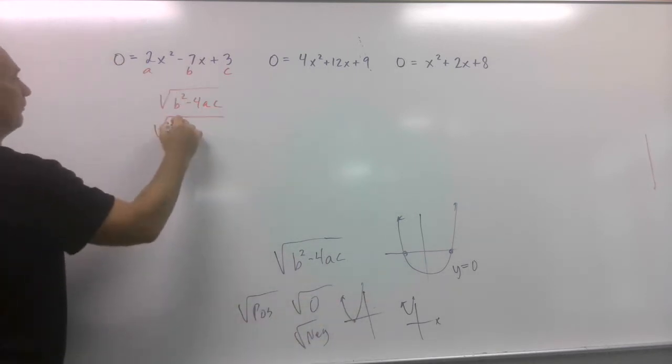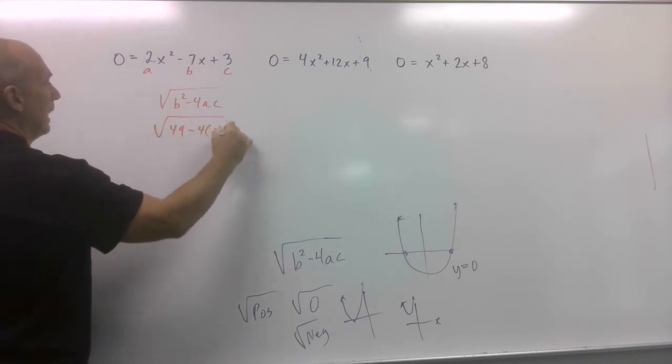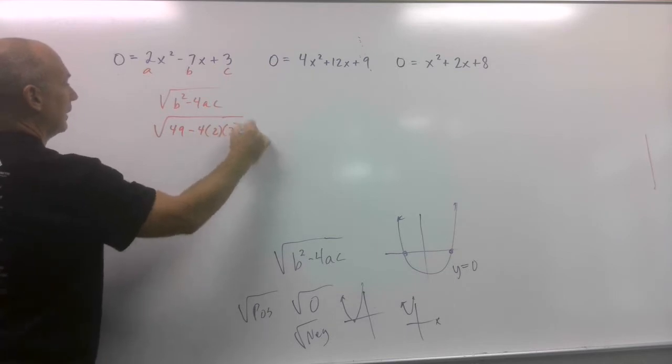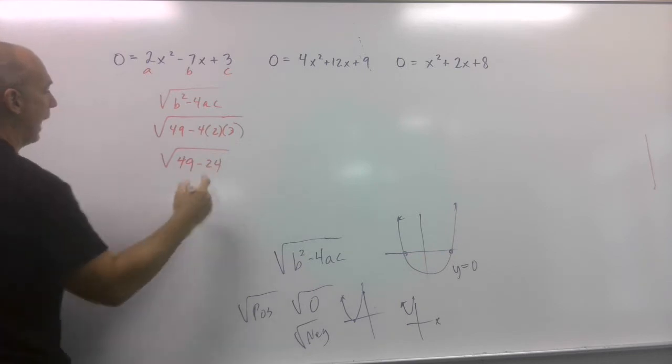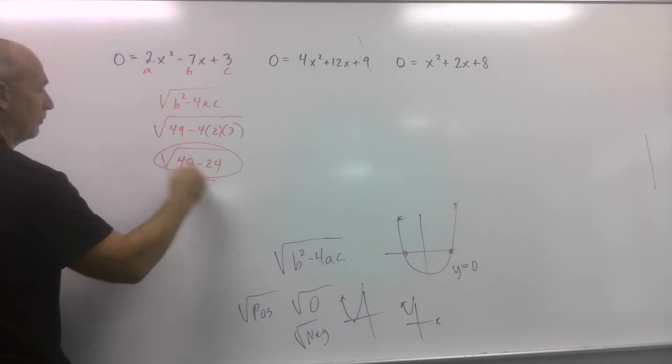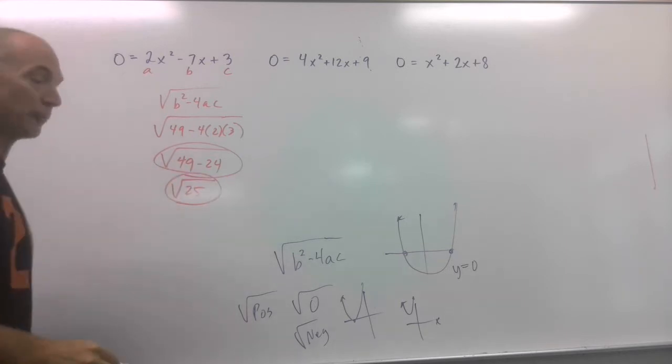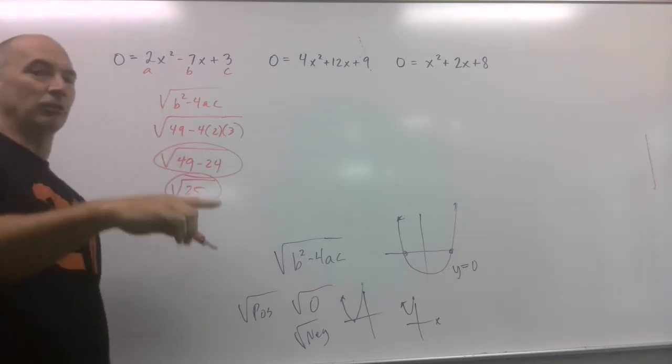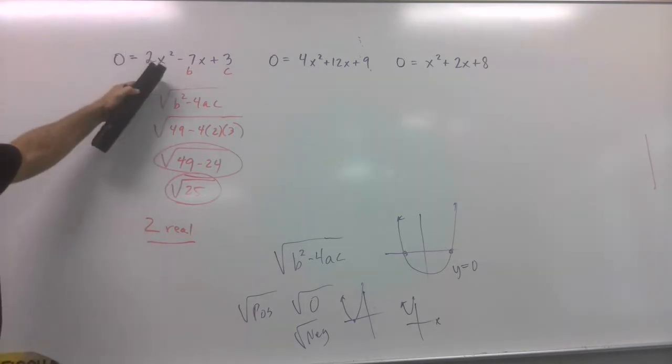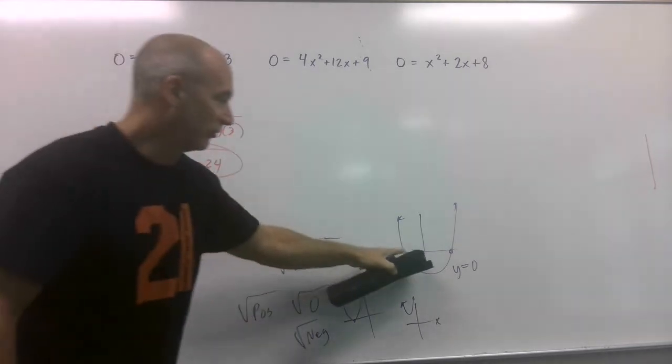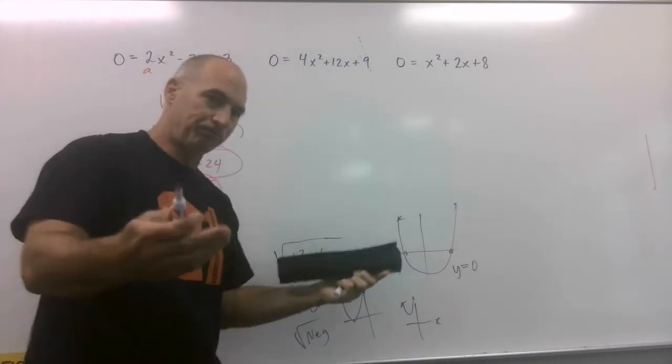So b squared would be negative 7, negative 7 is 49, minus 4 times a times c. Keep chugging along, 49, 6 times 4 is 24. I could stop right now. Look at the square root of 25. I knew this was positive. I know this is positive. Again, we're not worried about the answer. It's how many solutions are there going to be. There are going to be two real solutions for this one. So if I was to graph it, and you can always do that on Desmos, you'll see that there are two solutions. That's all they want.